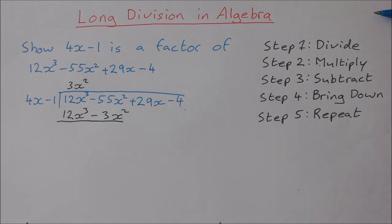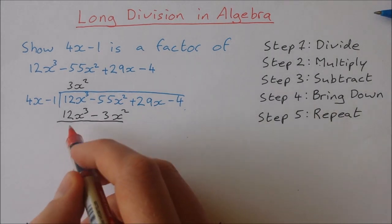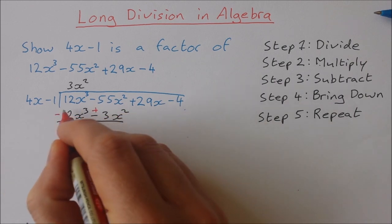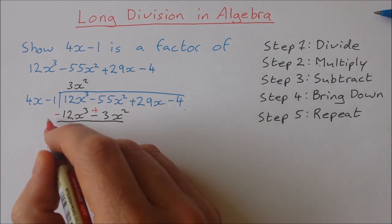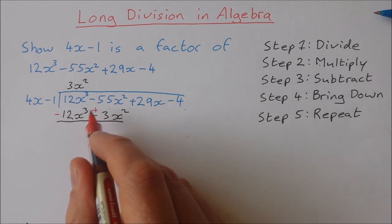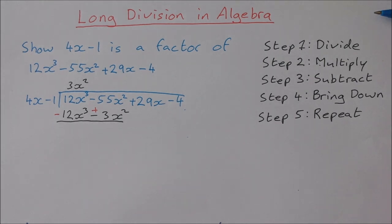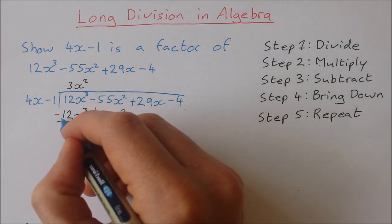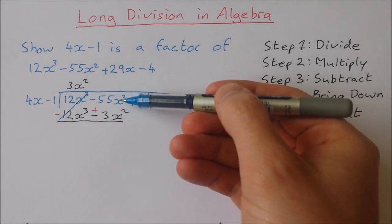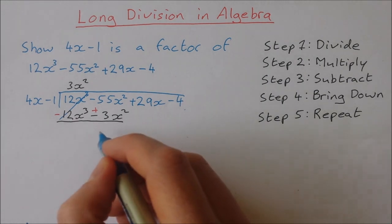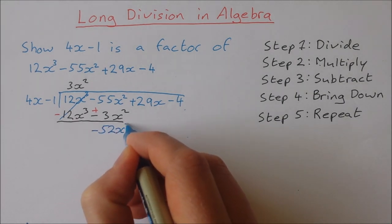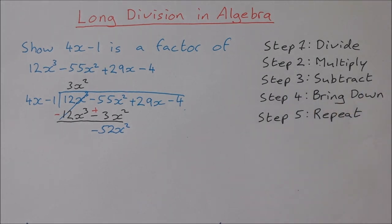Step 3 subtract. When I'm subtracting this here I need to change both of these signs because if I'm subtracting, this minus is going to multiply by this plus to give us minus and it's going to multiply by this minus to give us plus. So now these two cancel. These always give you 0. These two minus 55x squared plus 3x squared is going to give us minus 52x squared. That's step 3 subtract.